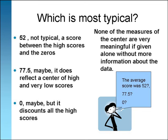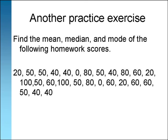So which average was most typical of the scores? 52 was not typical since it was between the high scores and the zeros. 77.5? Maybe. It does reflect a center of high and very low scores. Zero? Maybe, but it discounts all the high scores. We conclude that none of the measures of the center are very meaningful if given alone without more information about the data.